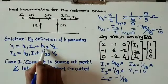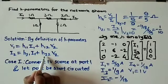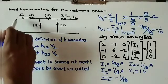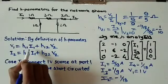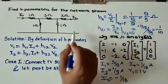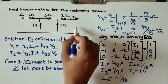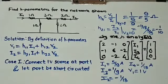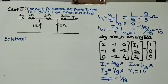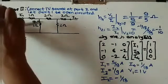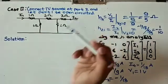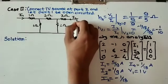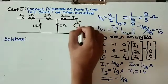For Case 2, to find h12 and h22, we set i1 equals 0 by open-circuiting port 1. We connect a 1-volt source at port 2. This is Case 2 where port 1 is open-circuited and the 1-volt source is applied at port 2.